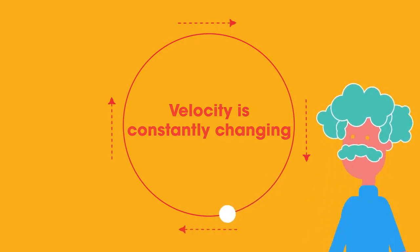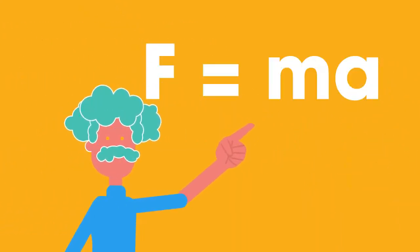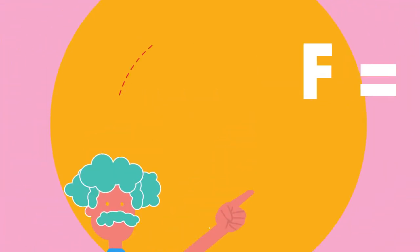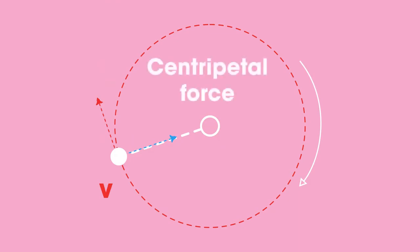But you may be wondering, what actually causes the acceleration? As you know from Newton's second law of motion, the net force acting on an object is directly proportional to its acceleration. In the case of circular motion, the net force that causes this acceleration is called the centripetal force, and it is always directed towards the centre of the circle.